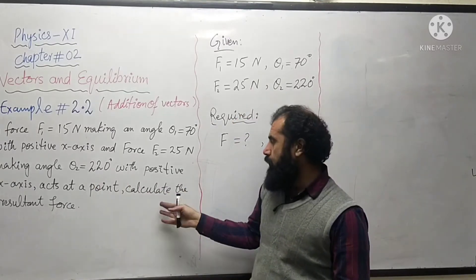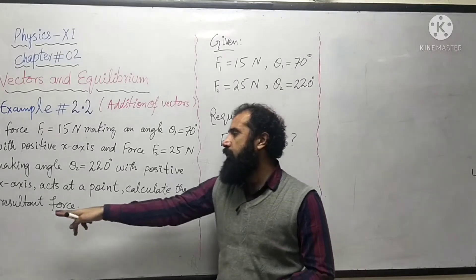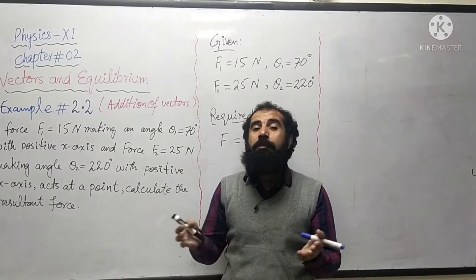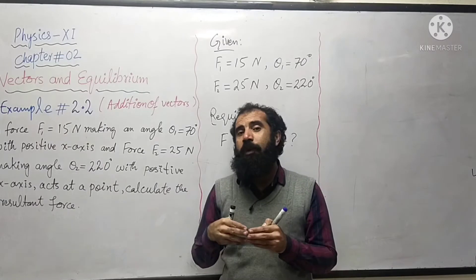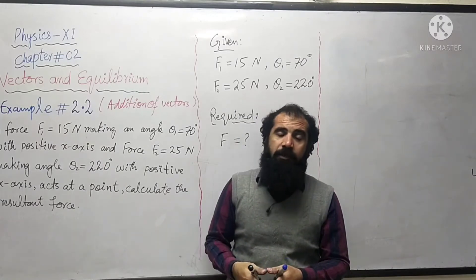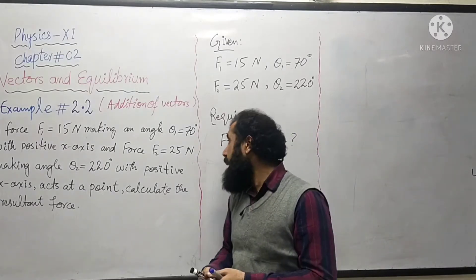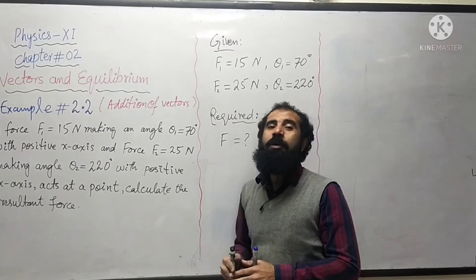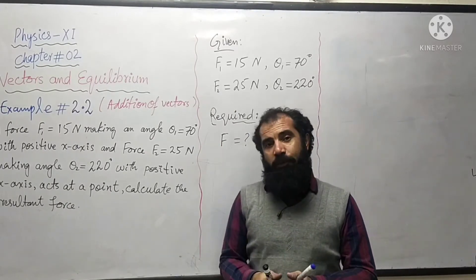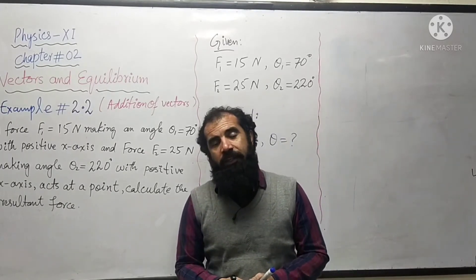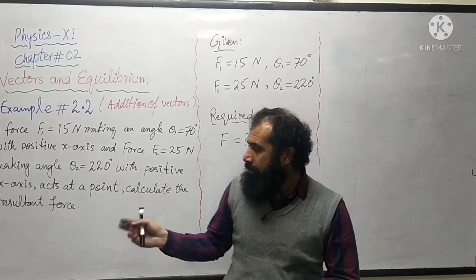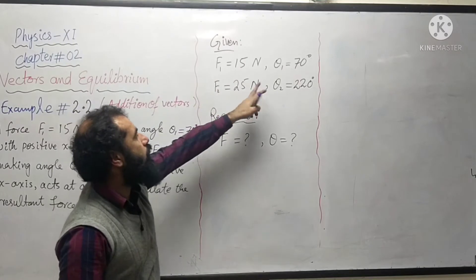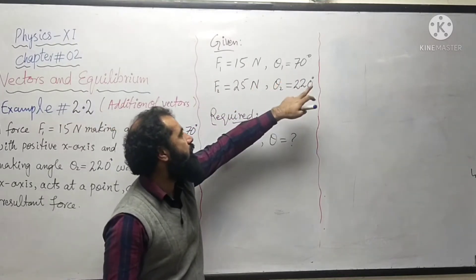We need to calculate the resultant force, because these two forces are acting together. Using the principle of superposition, we add them by the resolution by components method — analytically. Both magnitudes are given: 15 newtons and 25 newtons, and both directions are given: 70 degrees and 220 degrees with the positive x-axis.